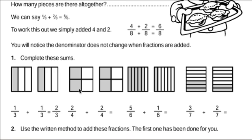Here, 2 parts out of 4, or 2 quarters, plus another 2 quarters, is 4 quarters. 4 over 4 is the same as 1 whole — it's all of them. Here, 5 parts out of 6 plus 1 part out of 6 is 6 parts out of 6.